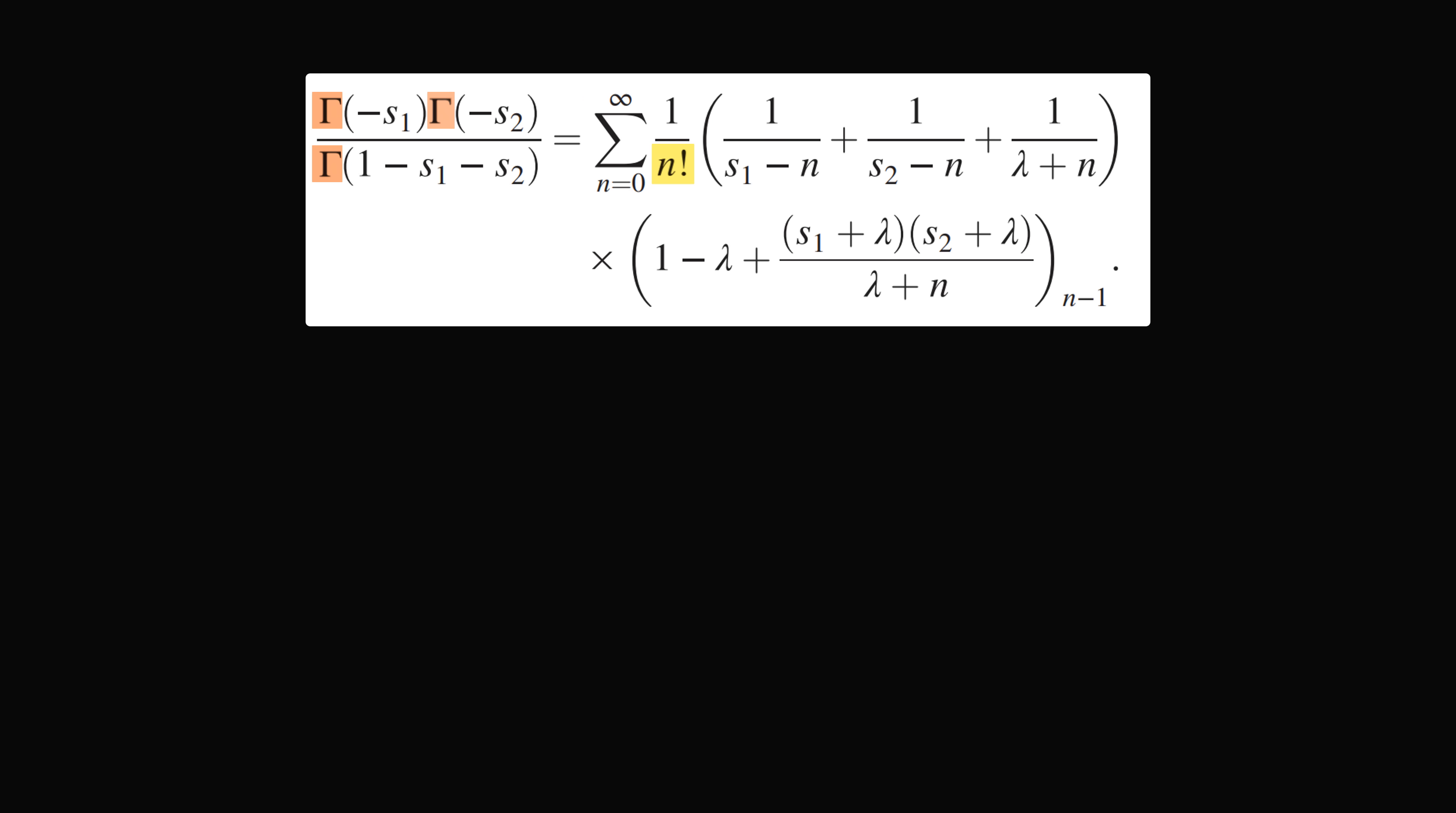So there's one more piece of notation in this formula that we need to go over, and here we have a parentheses with a subscript of n minus 1. This is to indicate something that's written in the paper.